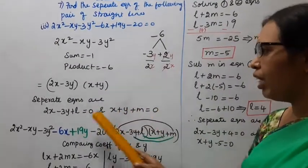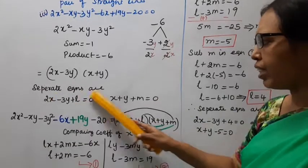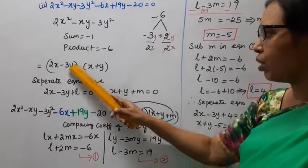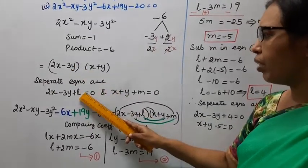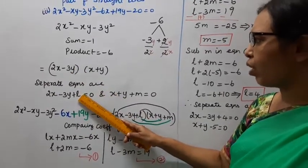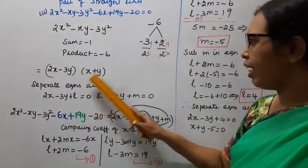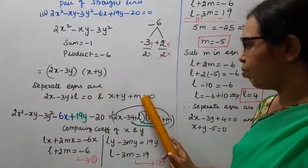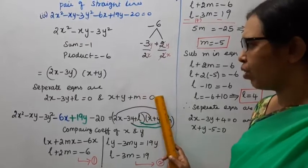Minus 3y represents minus 2y minus 3y as separate equations. There is one constant, and this gives us l plus m equals 0.